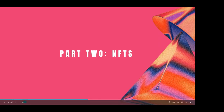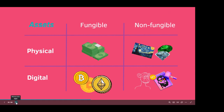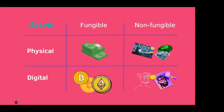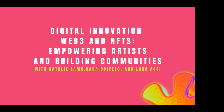That is what we brushed on in Part 1. Now Part 2 — NFTs. We talked about the different types of assets: physical or digital, and they can be fungible or non-fungible. Physical and fungible assets are exactly like money — one dollar is equal to one dollar, one pound is equal to one pound. I can give you ten dollars and you can give me ten one-dollar notes and it holds the same value.